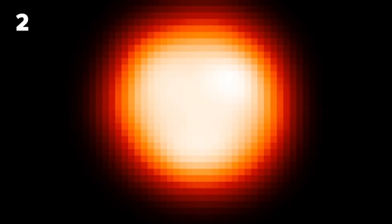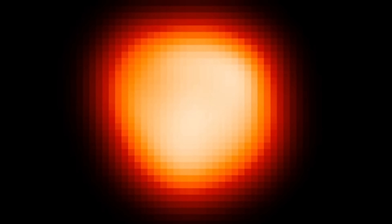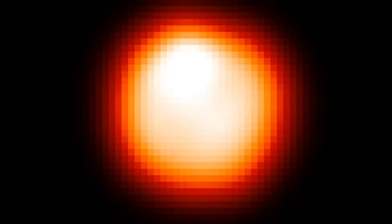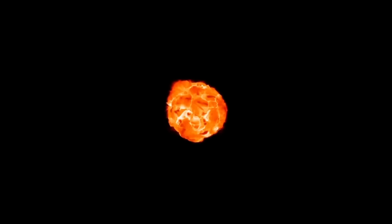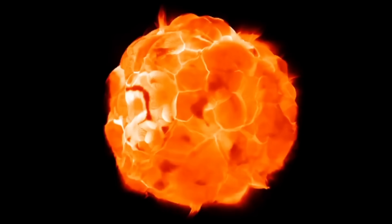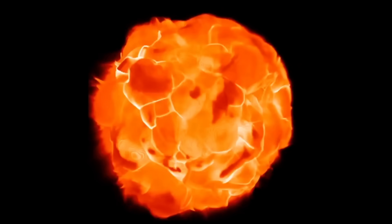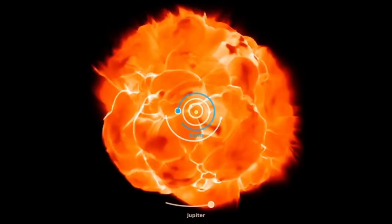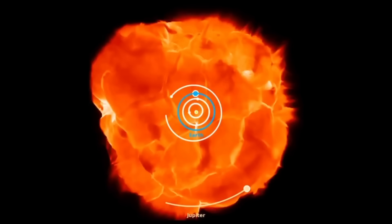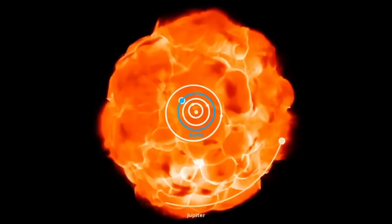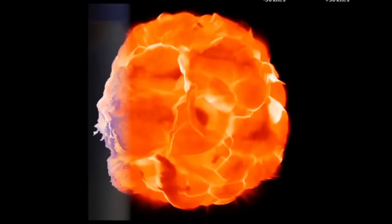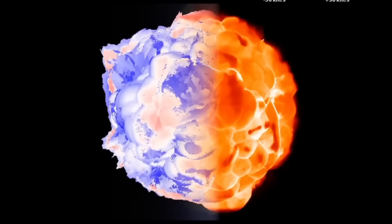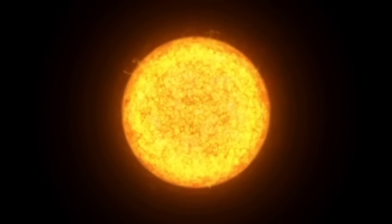Another type of dimming that scientists have seen in this star is a regular pattern of light changes that repeats every 400 days. This isn't caused by dust or anything outside the star. It actually comes from inside. Betelgeuse is a red supergiant, and like many stars of its kind, it experiences internal pulsations. These are slow, rhythmic expansions and contractions in the star's outer layers, kind of like a heartbeat. As the star swells up and then shrinks again, its brightness changes slightly. The 400-day brightness cycle is believed to be Betelgeuse's main pulsation rhythm, and it's one of the key ways scientists study the inner workings of this giant star.